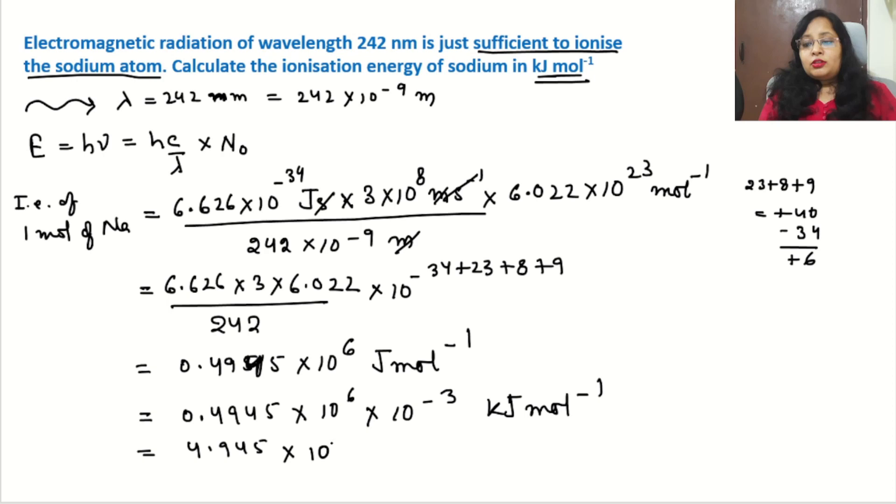10 to the power 6 and shifting rightward means minus 1, so 6 minus 1, it becomes 10 to the power plus 5 into 10 to the power minus 3. So what we will get? 5 minus 3 equals 2. So final answer will be 4.945 into 10 to the power 2 kilojoule per mole.